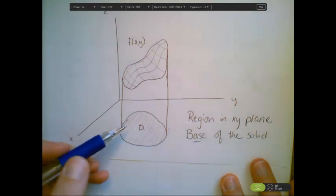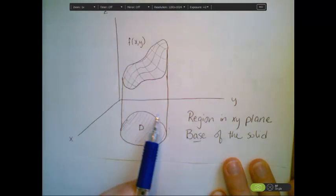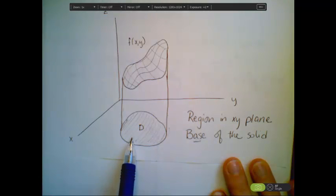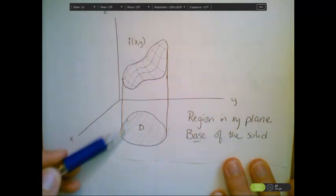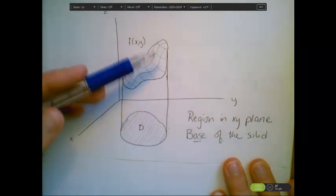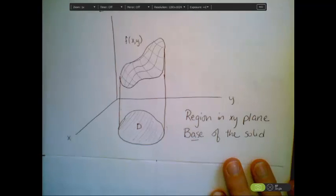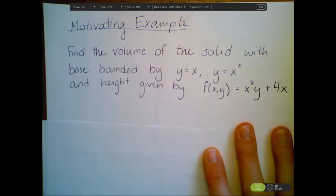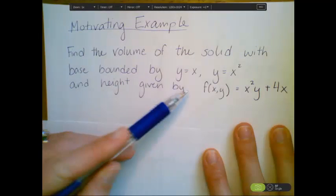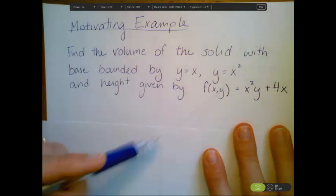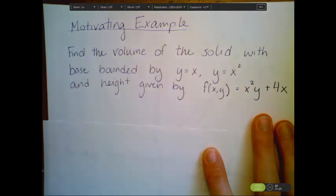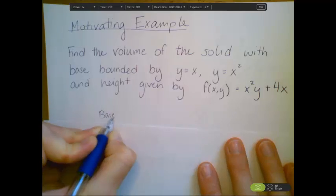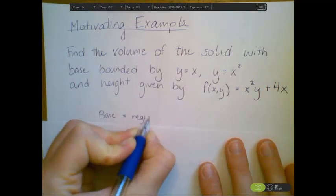For this section, we're going to talk about taking integrals when our base is no longer just a rectangular region. Let's say we want a region in the xy plane where the base of the solid, the region d, is some non-rectangular shape. We're doing the exact same thing — the base is the region in the xy plane and the height is given by f of xy. Let's start with a motivating example: find the volume of a solid with a base bounded by y equals x and y equals x squared, and height given by f of xy equals x squared y plus 4x. The base is the region of integration.